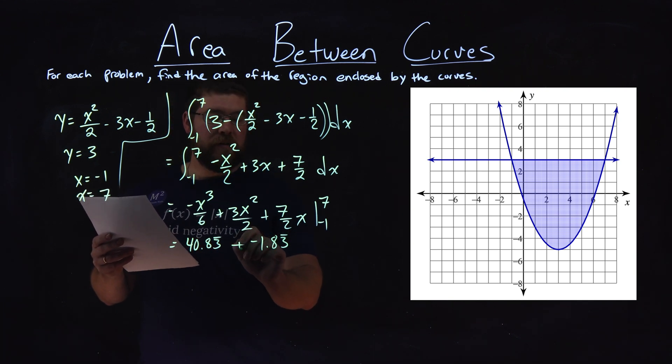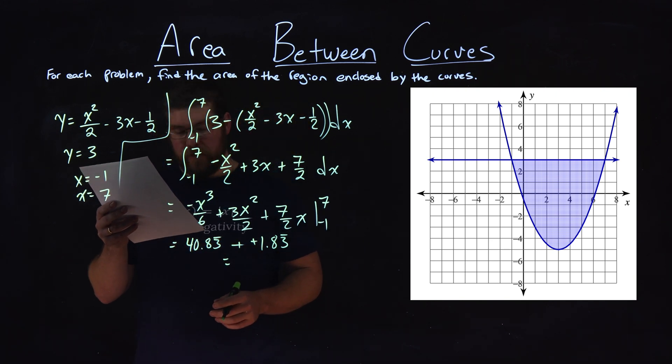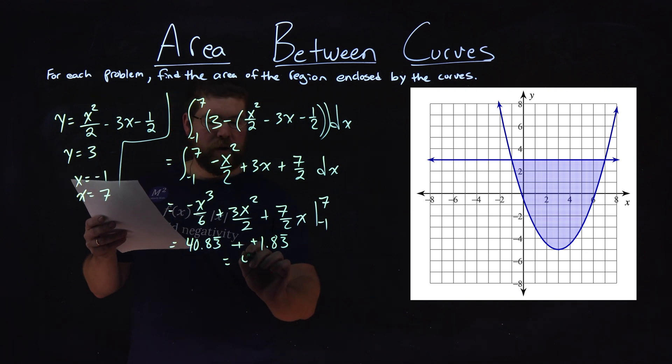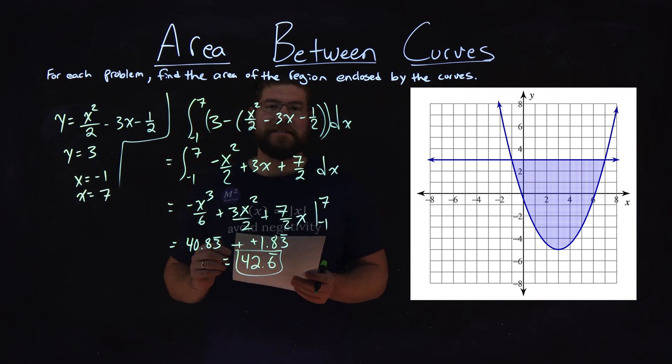Subtracting negative, same thing as adding a positive. So when we add the 2, 40.83 repeating plus 1.83 repeating, we have 42.6 repeating. And there we have it. My final answer for the area between the curves is 42.6 repeating.